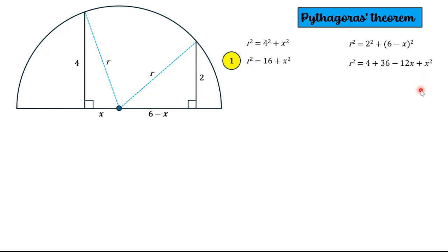And we can simplify that by doing one further step. 4 plus 36 is 40, and we can call this equation 2.